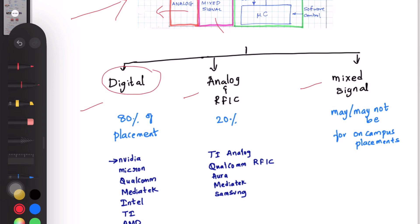Digital VLSI openings are higher than other profiles. Around 80 percent of companies who visit for recruitment hire digital VLSI roles. Around 20 percent hire tech analog and RFIC engineers. During my period there was no openings for mixed signal engineers, hence it is not guaranteed.